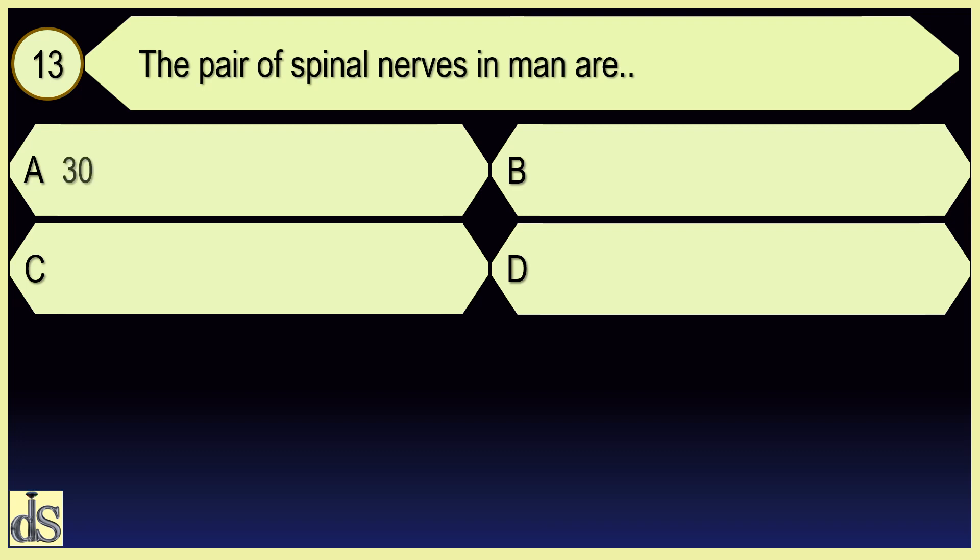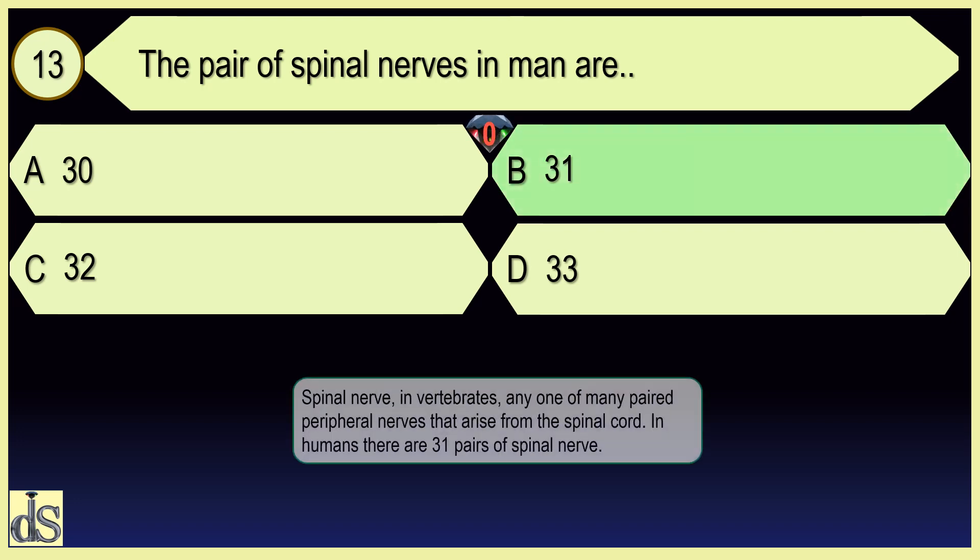The pair of spinal nerves in a man are 31.